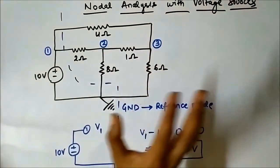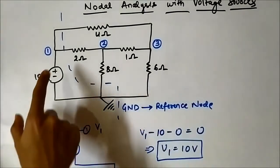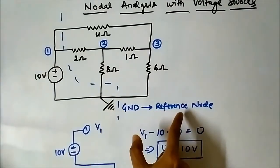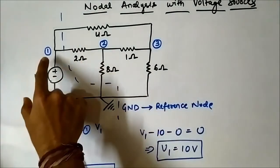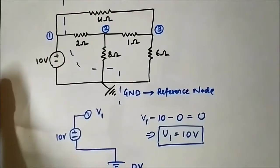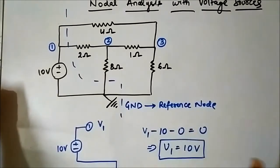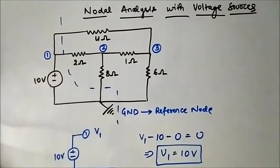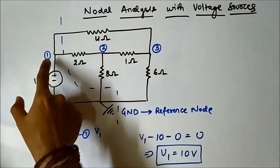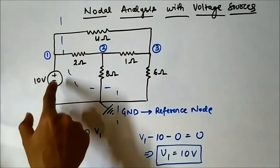But the voltage at nodes two and three is not equal to 10 volts, because there is some extra connection of resistors there. Here simply, between node one and ground, the independent voltage source of 10 volts is connected, so the voltage at node one is simply 10 volts — that is the proof. As you practice more and more circuits, you can simply conclude that if a voltage source is connected between a particular node and ground, then the voltage at that node equals the magnitude of the connected voltage source.